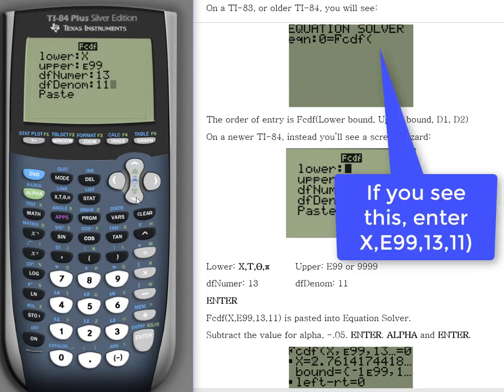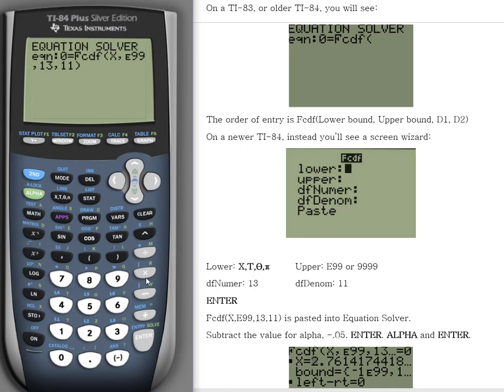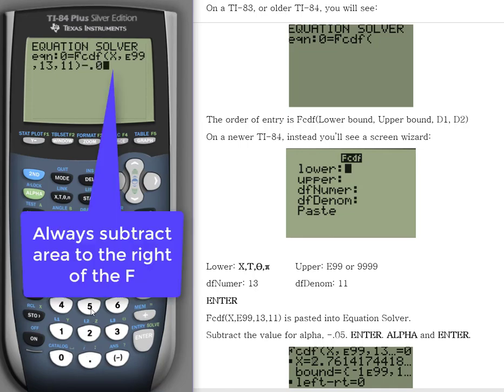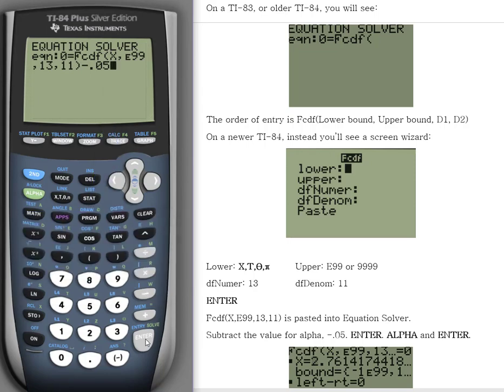If you have an older TI-83, you should put the values in the same order in the parentheses. Enter to paste. We are subtracting out the alpha. Always subtract area to the right and press enter.